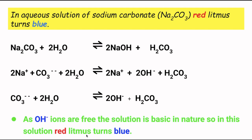Because the solution is basic, red litmus turns to blue. In general: for a salt of weak acid and strong base, red litmus turns blue in aqueous solution. For a salt of strong acid and weak base, the solution is acidic and blue litmus turns red. Write the hydrolysis reaction, identify free H⁺ or OH⁻ ions, and determine the litmus effect.